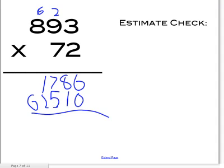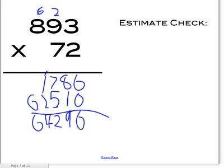Draw a line and add. So 0 plus 6 equals 6. 8 plus 1 equals 9. 7 plus 5 equals 12, so put the 2 here and carry 1. 1 plus 2 equals 3, plus 1 equals 4. And then bring the 6 down. And this is your answer: 64,296.